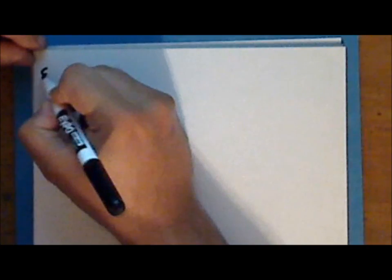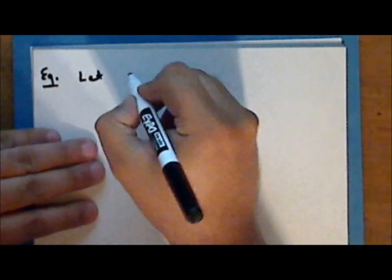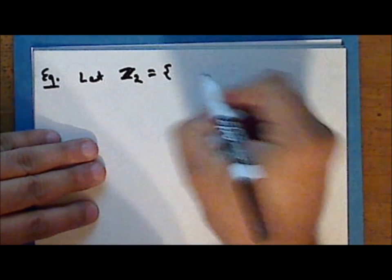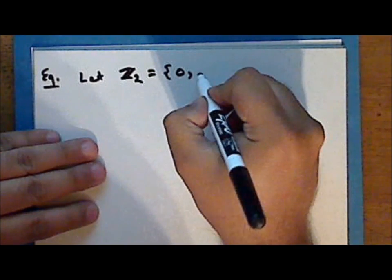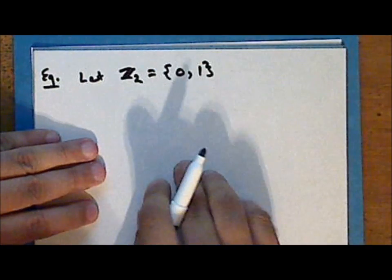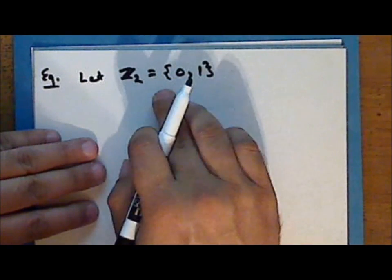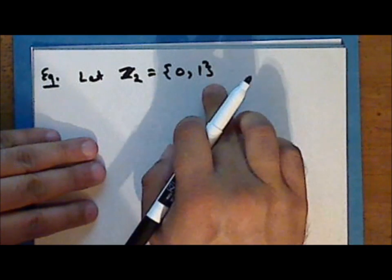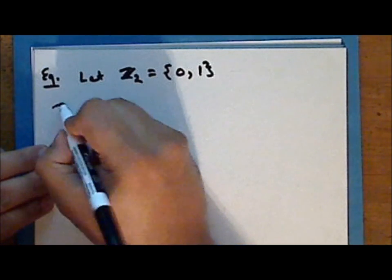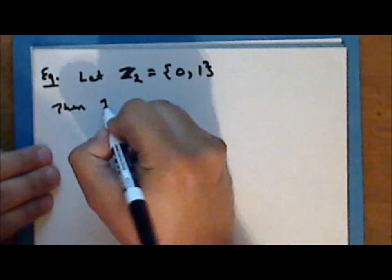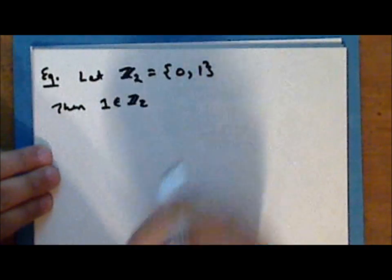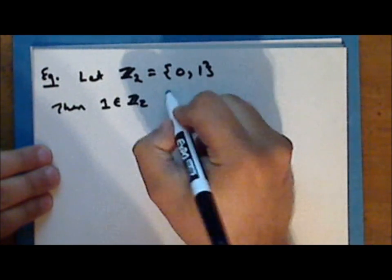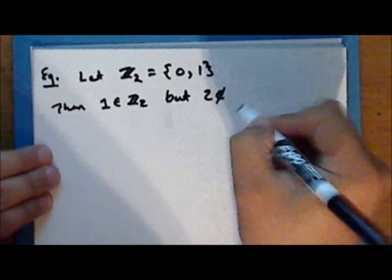For the second example, let the set — which we denote with the ornate letter Z with a subscript 2 — be the set which contains the elements 1 and 0. One way to denote a set is to list its elements using braces, as we did in this case. Then the number 1 is an element in this set, which we call the set of integers modulo 2, but the number 2 is not an element in this set.